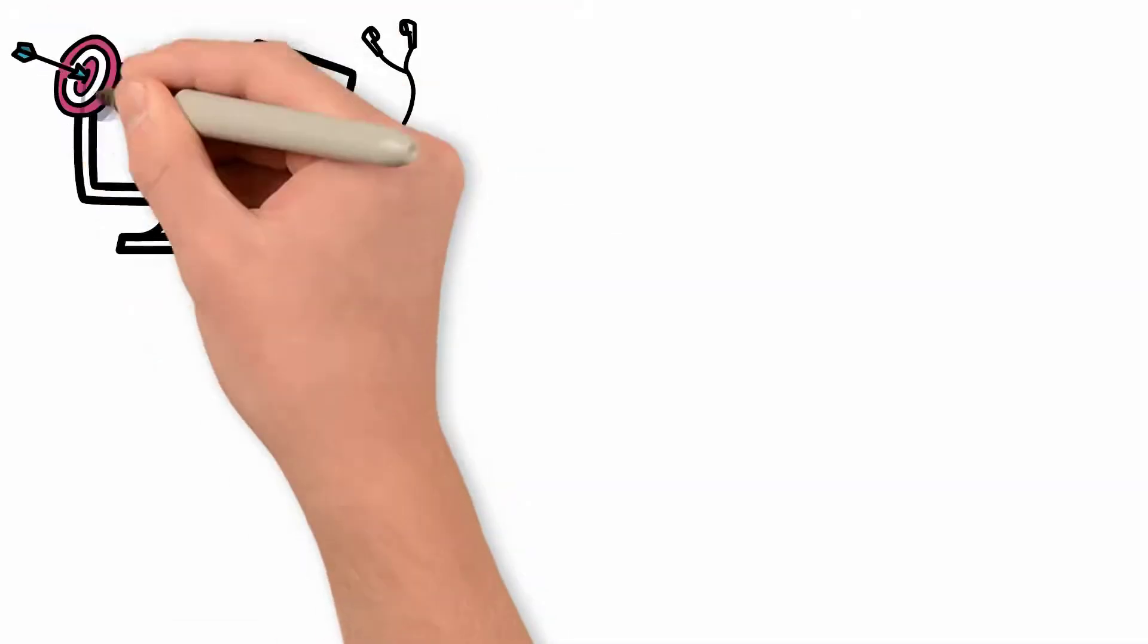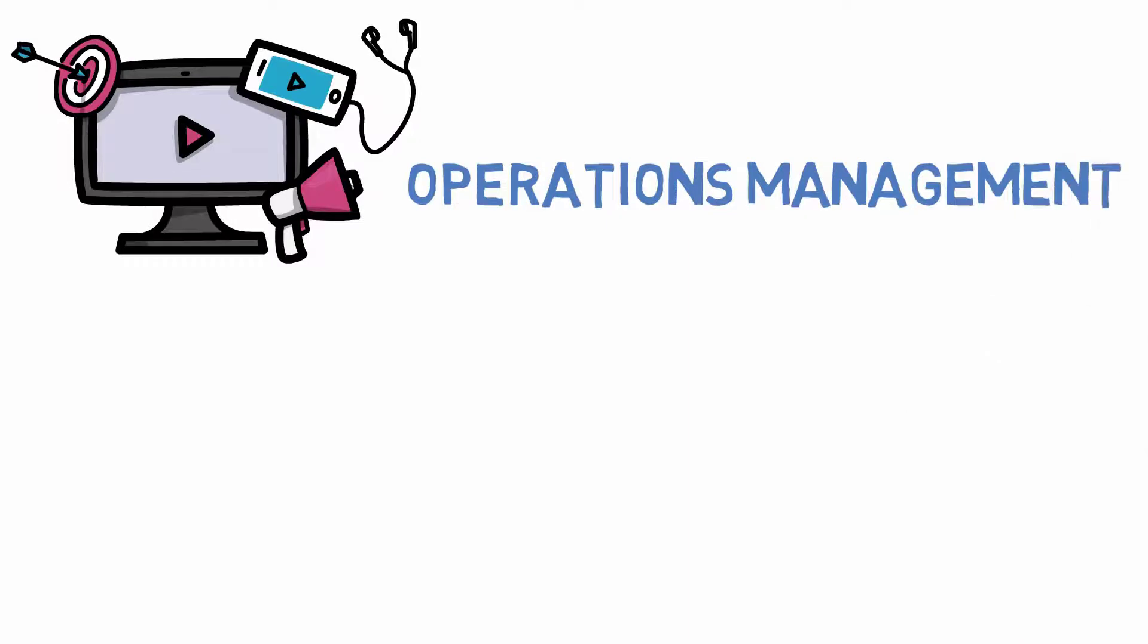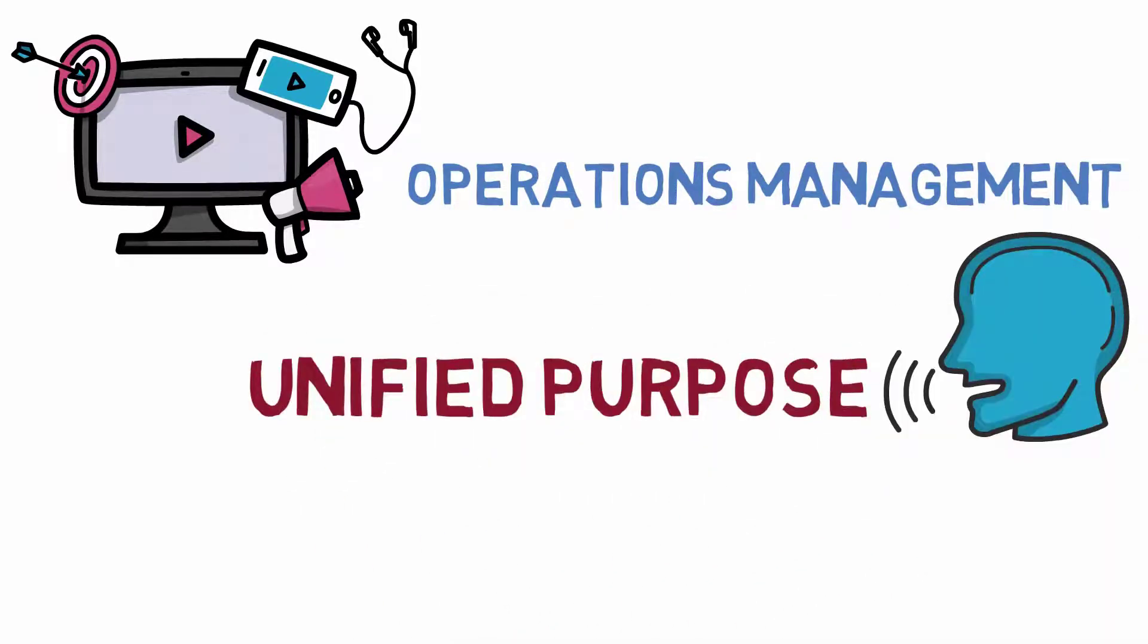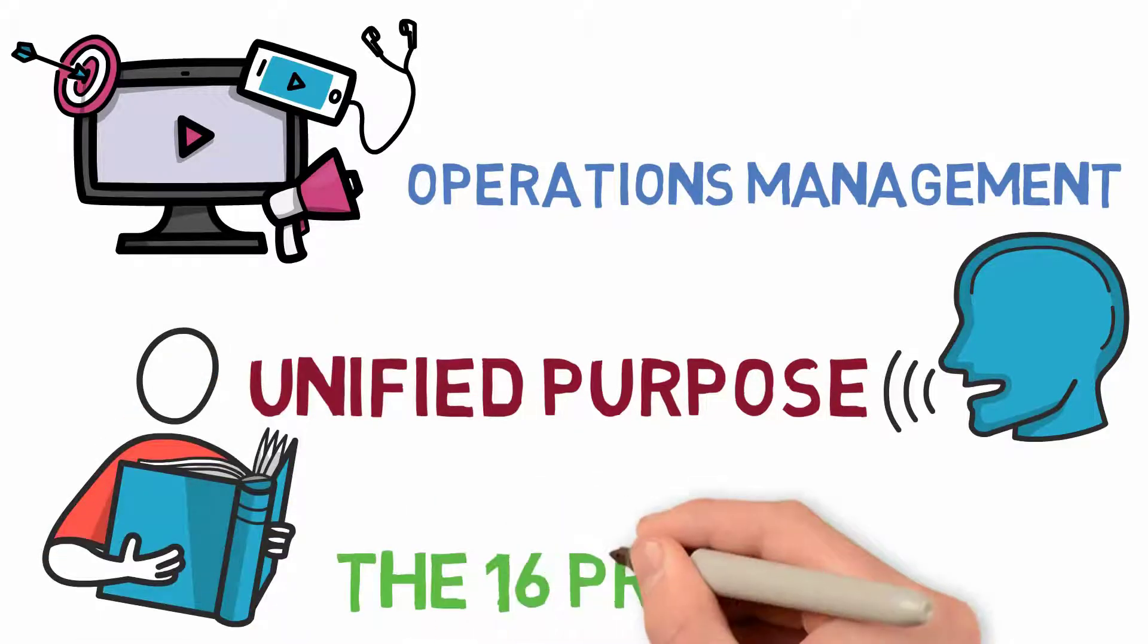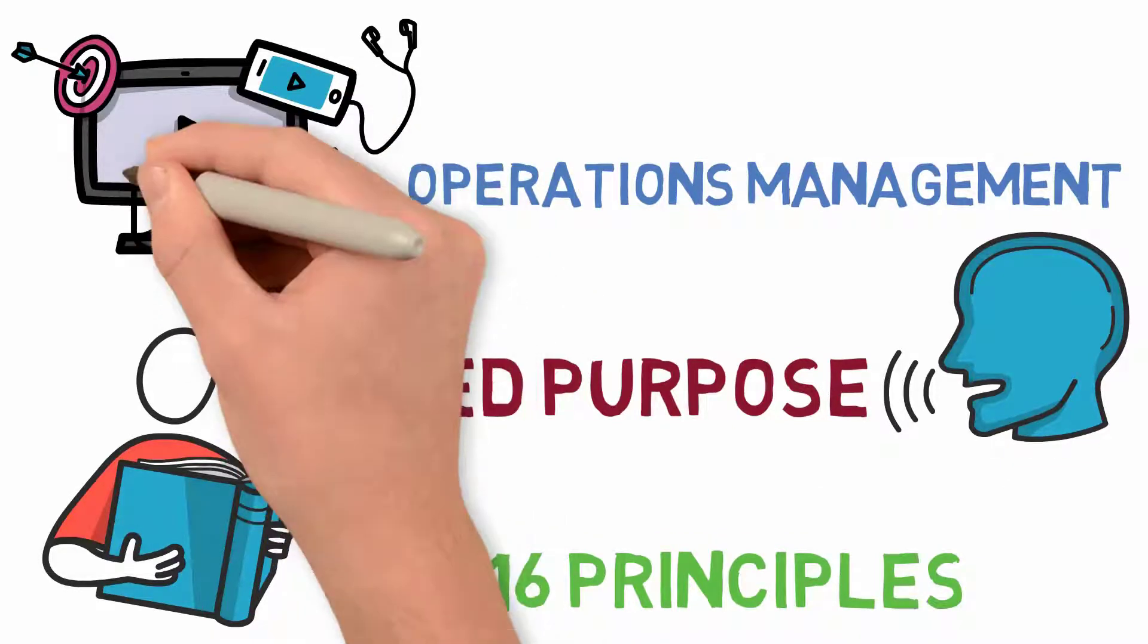This video is another in the series from the 16 Principles of Operations Management. Today we are talking about Unified Purpose and how you can apply these principles in your business. If you're interested in learning more about these 16 principles, then make sure you check the other videos in our playlist.